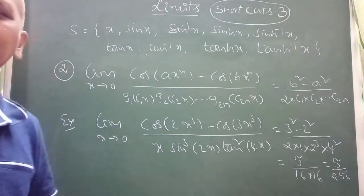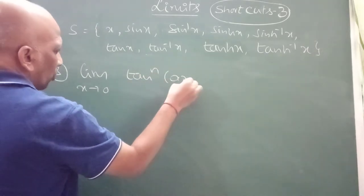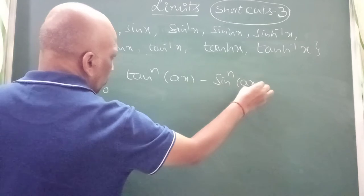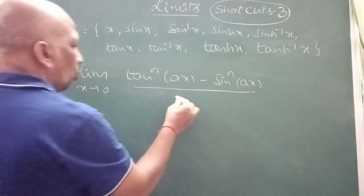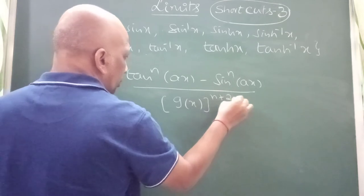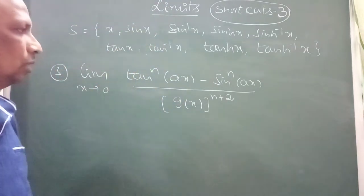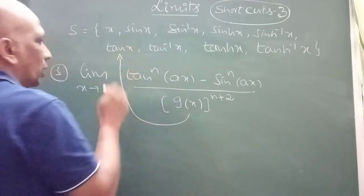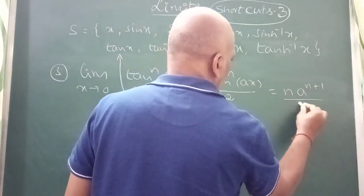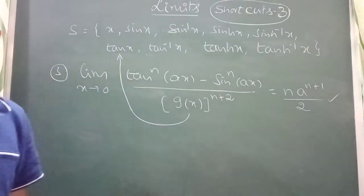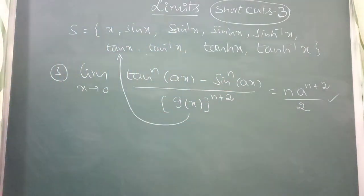Now we do the next shortcut. Limit x tends to 0 of tan^(4n)(Ax) minus sin^(4n)(Ax) divided by g(x)^(4n+2), where g of x belongs to set S. In that case the answer is n times a to the power n plus 2, divided by 2. For example, limit x tends to 0.